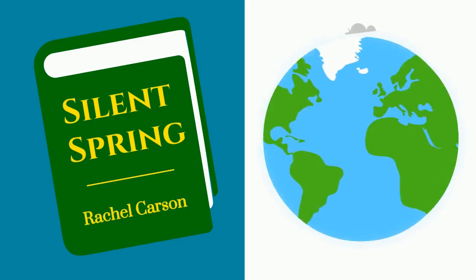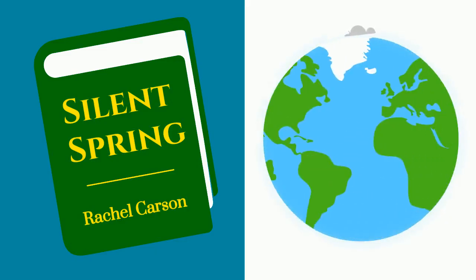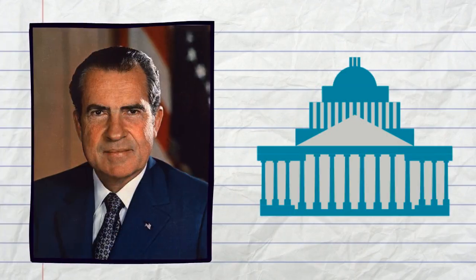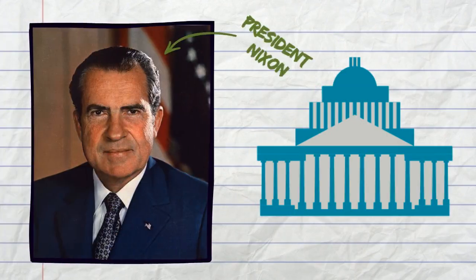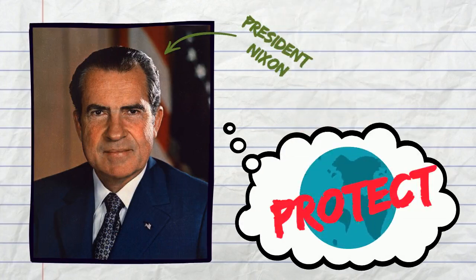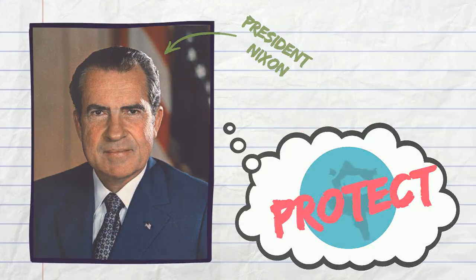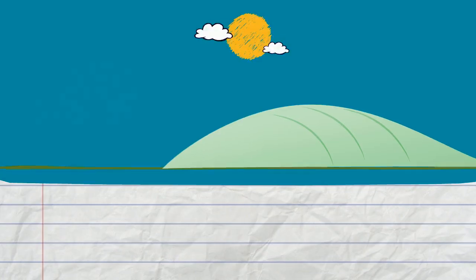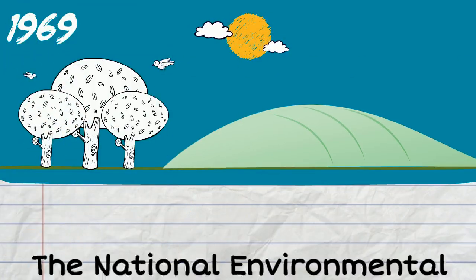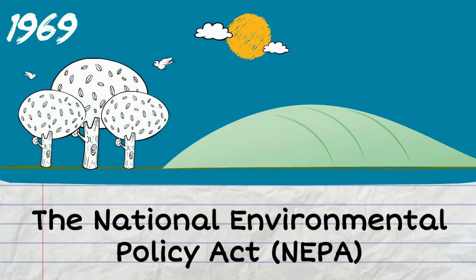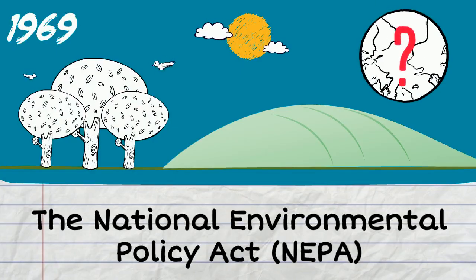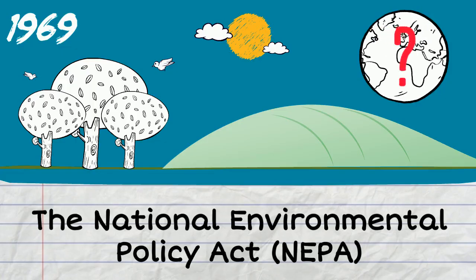She is often credited for the start of the country's environmental movement. Within the same decade, legislators came together under Richard Nixon's administration and made a decision: let's protect our planet. The first mainstream environmental law was enacted in 1969, called the National Environmental Policy Act. It required groups to consider environmental impacts whenever they wanted to take on a new project.